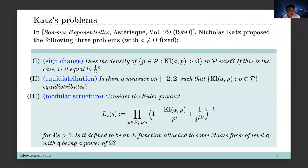Now we are in the position to formulate the questions of Katz as indicated in the title. In his book, Katz proposed three questions. The first one is on the sign change of Kloosterman sums with prime moduli — he asks what is the density of positive Kloosterman sums with prime moduli. The second one is on the equidistribution when p runs over all prime moduli. For the third question, we use Kloosterman sums with prime moduli as a local factor, then take the product for all p not dividing a.